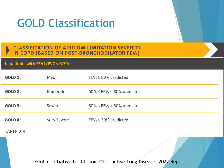Beyond diagnosis, the FEV1 percent predicted from spirometry is used to classify the severity of airflow limitation. In the GOLD guidelines, an FEV1 ≥80% predicted indicates mild airflow limitation, while an FEV1 of 20% predicted indicates very severe airflow limitation. This FEV1 score is a percentage compared to normal volume for a person of the same gender, height, and age. FEV1 normally declines with age after around age 20, but declines more rapidly in patients with COPD.